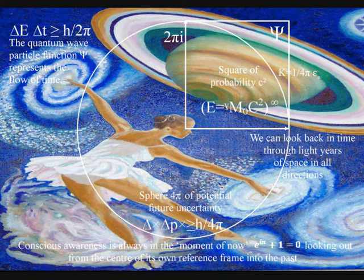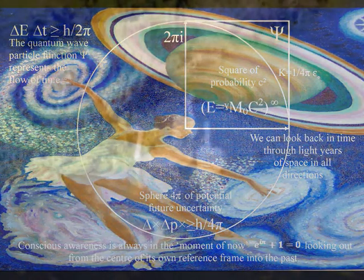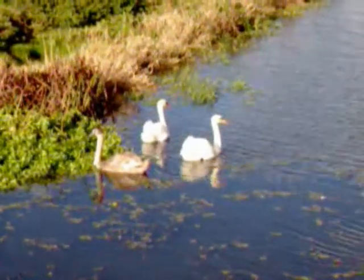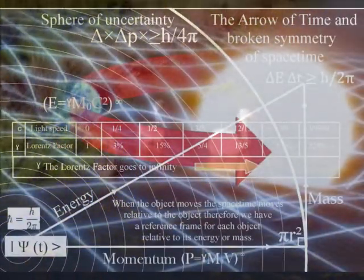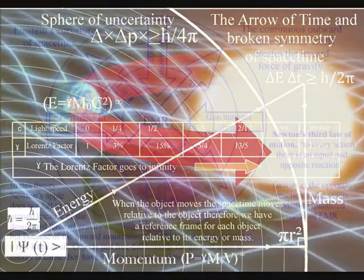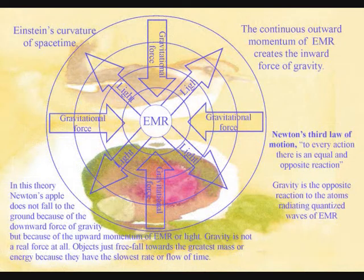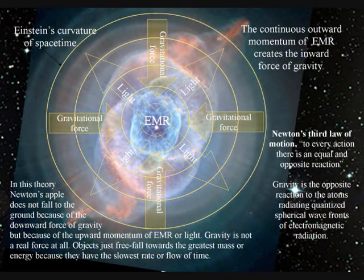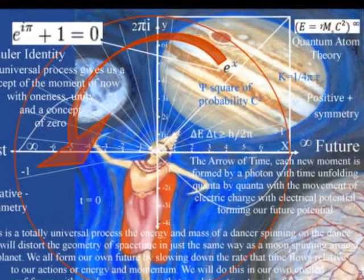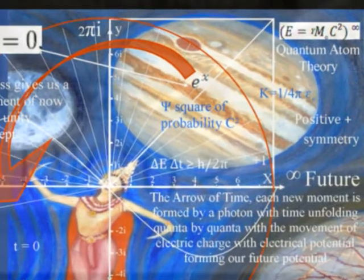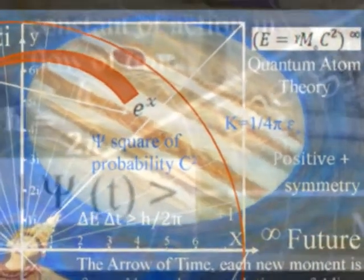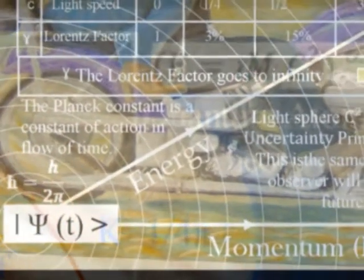Life will create its own ripples in the fabric of space-time as part of one universal process — this is true for the smallest creature as it is for the largest planet. Therefore Newton's universal law of gravity is part of this process. In this theory, Newton's apple does not fall to the ground because of the downward force of gravity, but because of the upward momentum of electromagnetic radiation — light. Gravity is not a real force at all; it is a secondary force to the electromagnetic force. Objects simply freefall towards the greatest energy because it has the slowest rate of time, or the greatest time dilation. This can be seen in the mathematics, with both the gravitational force and the electromagnetic force sharing the inverse square law.